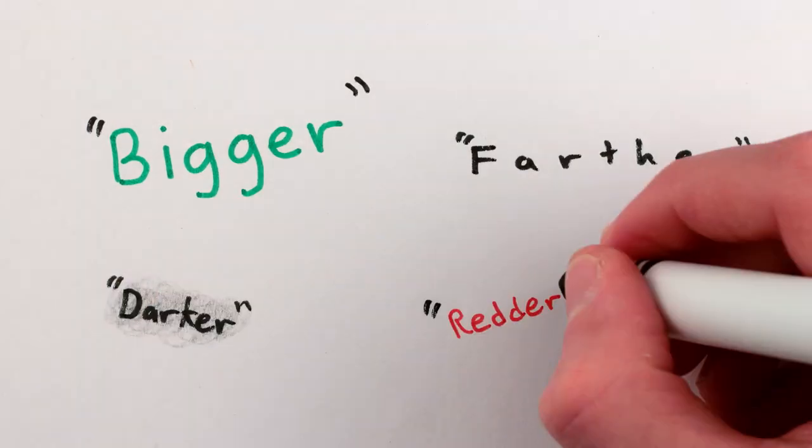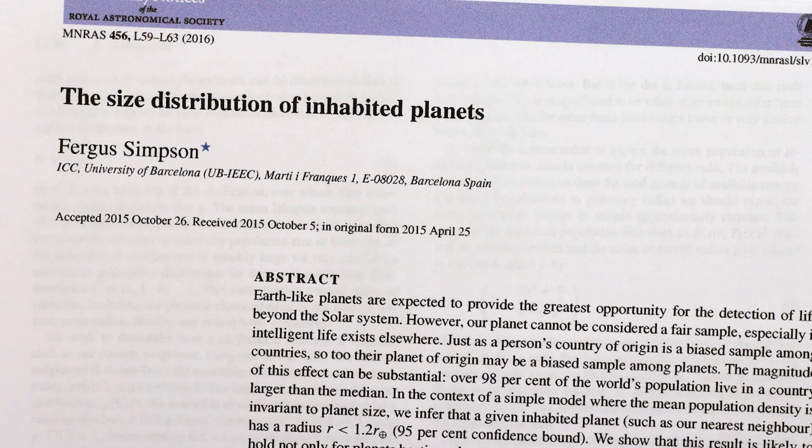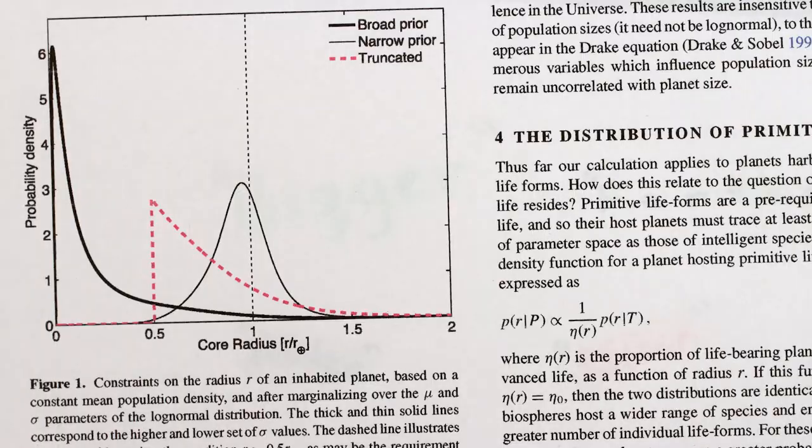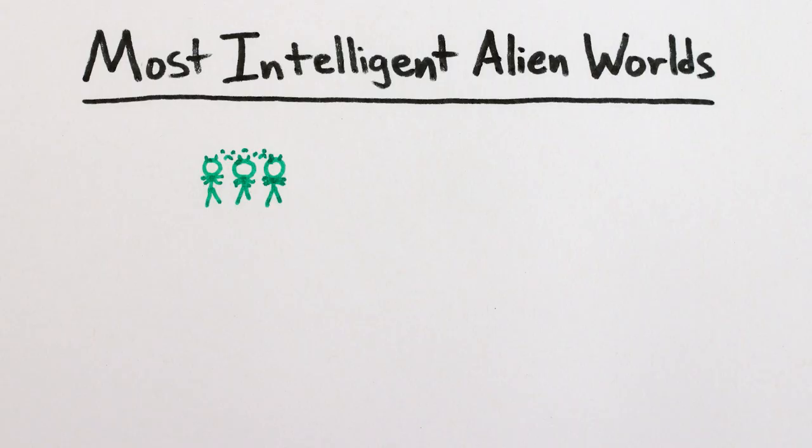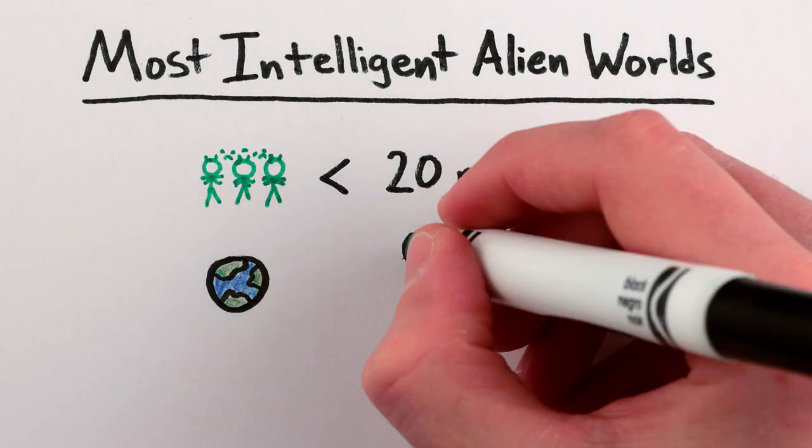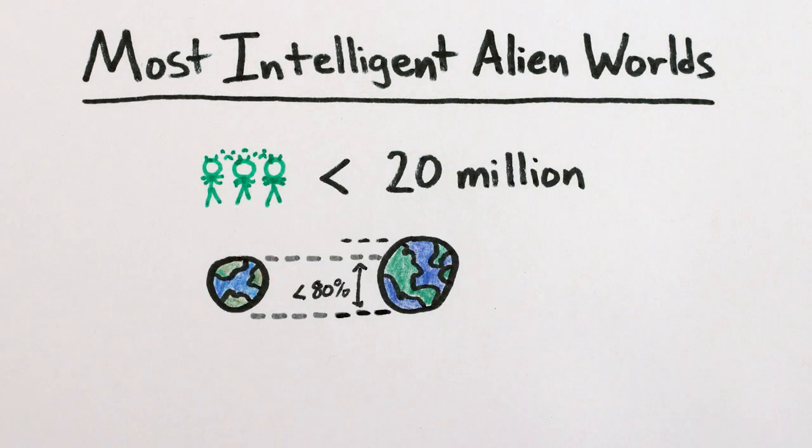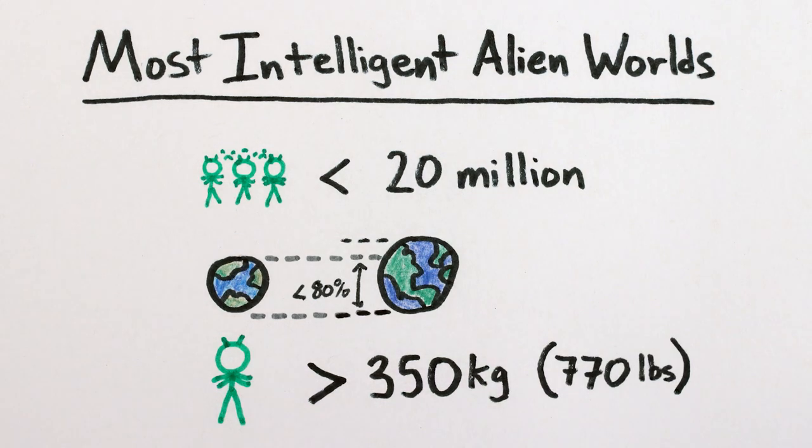If all this sounds a bit unspecific, well, with just a few more simple and reasonable assumptions based on basic physics, we can be more precise. Researchers have predicted that the population of most intelligent alien species should be below 20 million individuals. The majority of planets with intelligent life should have less than 80% the radius of the Earth, and the individuals of most intelligent alien species should be at least as massive as polar bears.